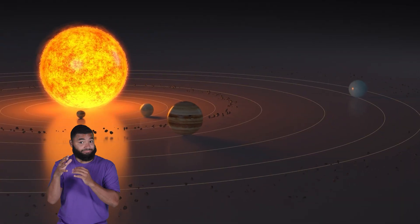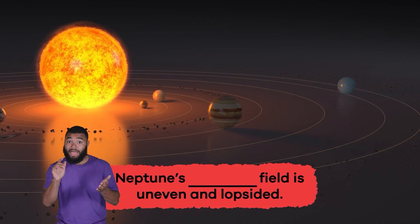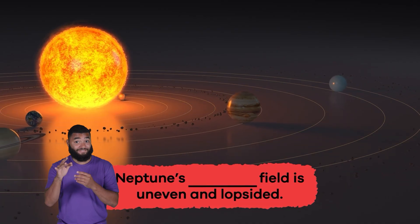Fill in the blank. Neptune's blank field is uneven and lopsided. Magnetic.